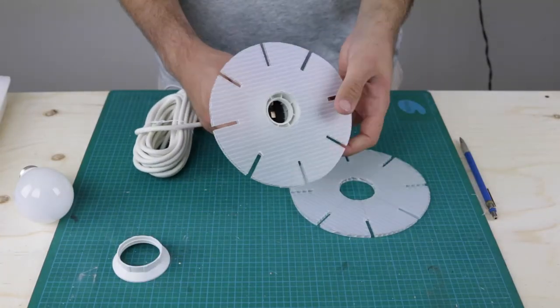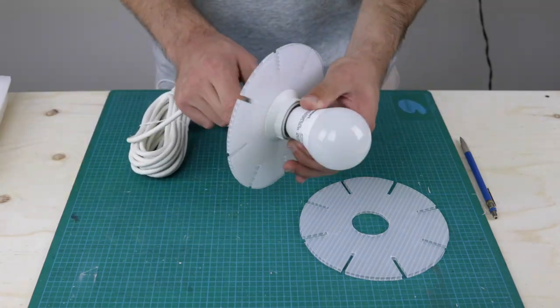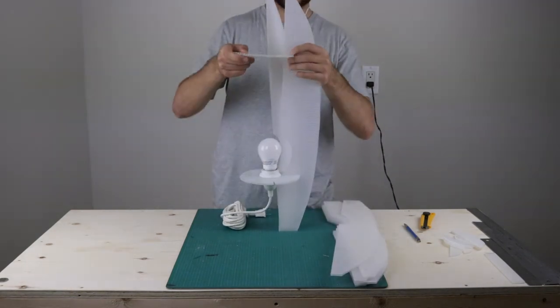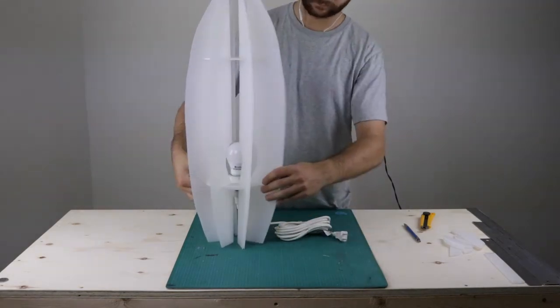And with all of my strips cut it was time for final assembly. Some of my cuts were a little off but luckily the plastic has some give to it so you can flex them into shape. And just like that the lamp was done.